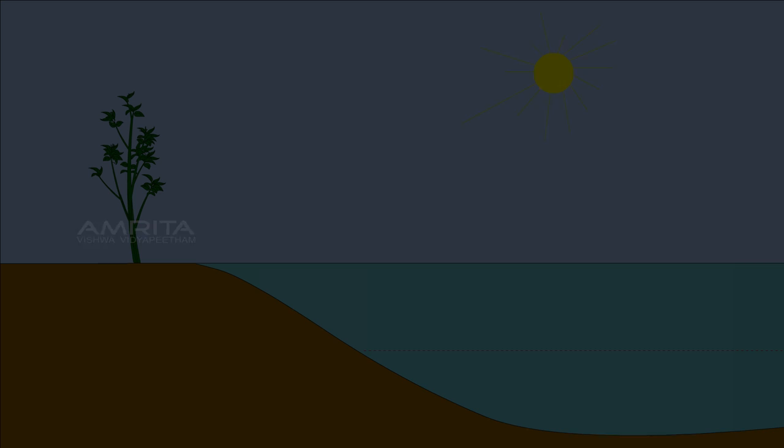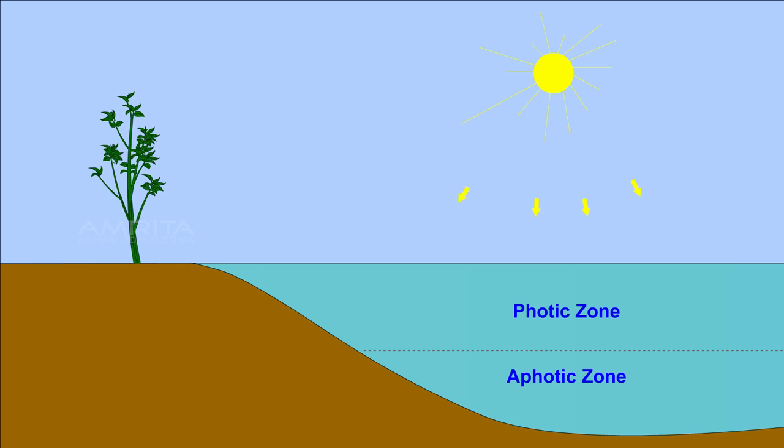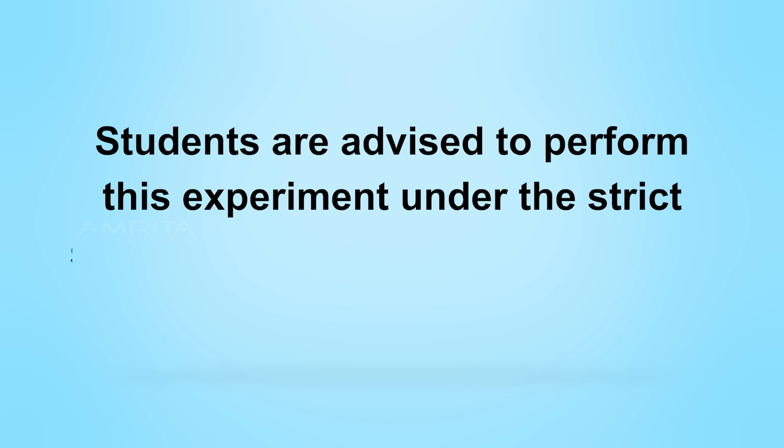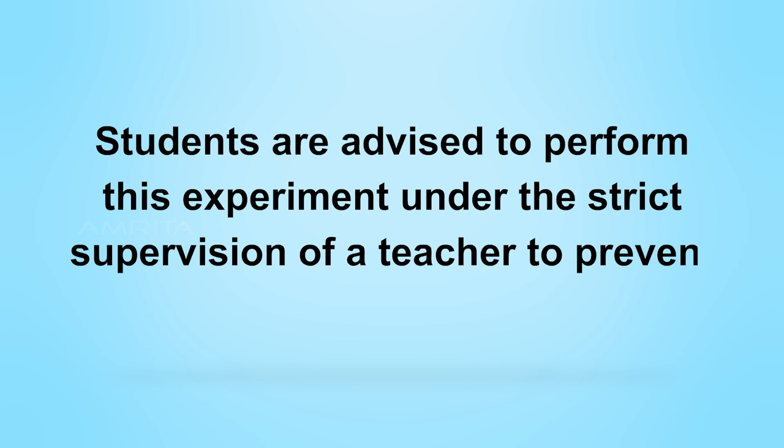Observation: The value of x represents the depth of the photic zone up to which sunlight penetrates in the water body and photosynthesis takes place. Precaution: Students are advised to perform this experiment under the strict supervision of a teacher to prevent danger such as drowning.